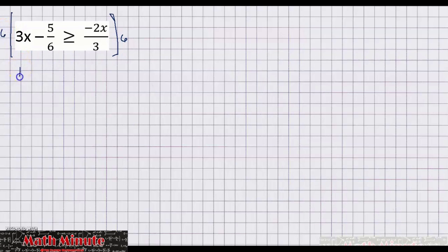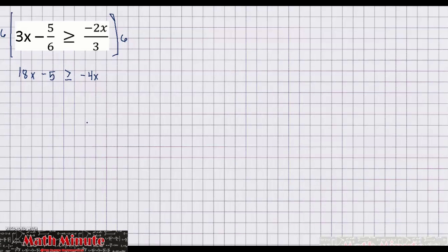So 6 multiplied by 3x, that would be 18x. Then 6 over 6, that would be 1, so we will have negative 5 here. The inequality is unchanged. Then 6 divided by 3, that would be 2. 2 multiplied by negative 2x, that will be negative 4x.